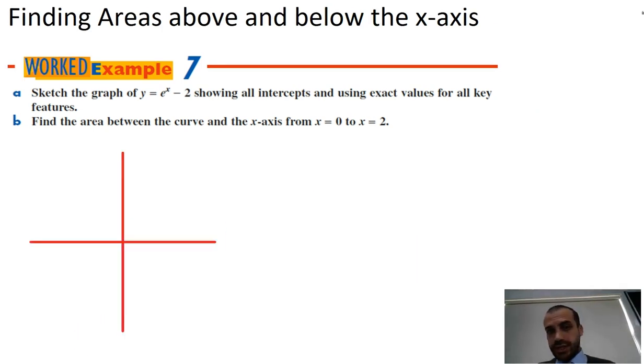First step is going to be sketching our graph. So the graph we're sketching is y equals e to the x minus 2. Now this is an exponential function, so it's going to look something like that. We don't know exactly how it's going to look, but that's the basic shape.